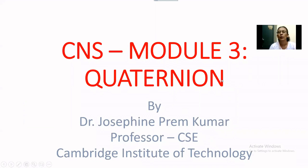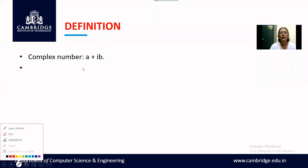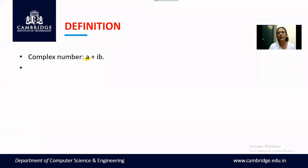Today we will see what is a Quaternion. You have seen complex numbers — a complex number consists of both a real part and an imaginary part. The real part is A, the imaginary part is B, and the complex number is denoted by A plus iB, where i stands for the imaginary part. This Quaternion is an extension of complex numbers.